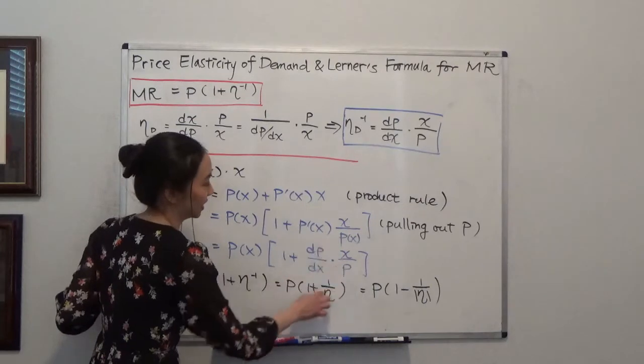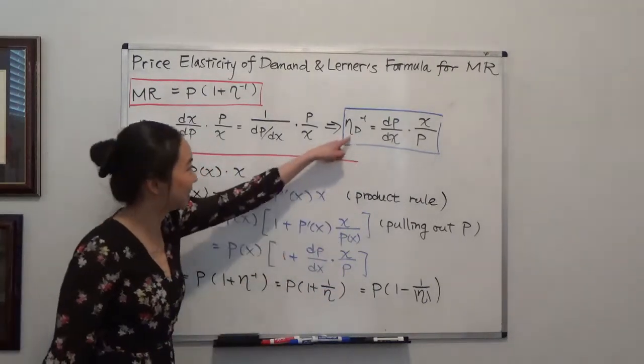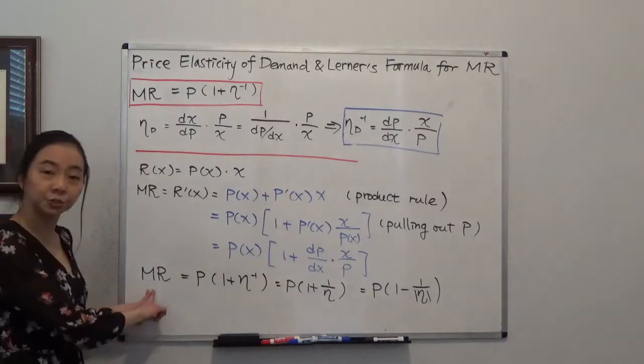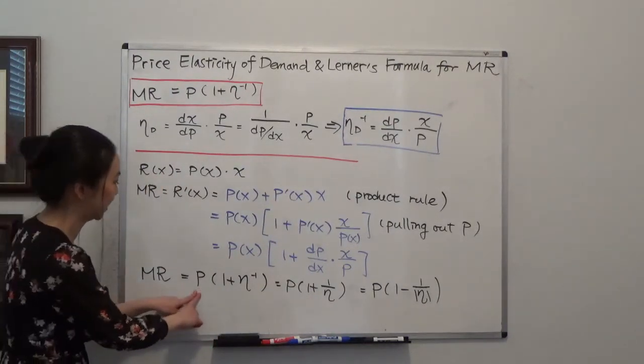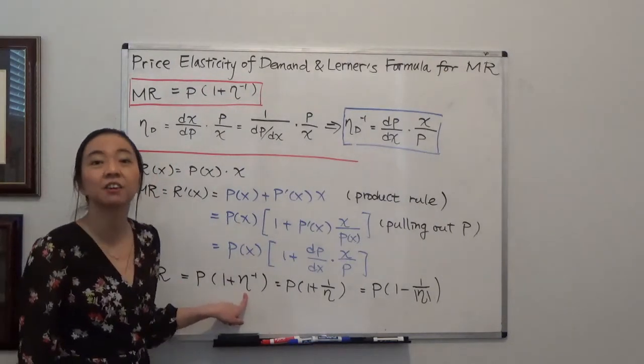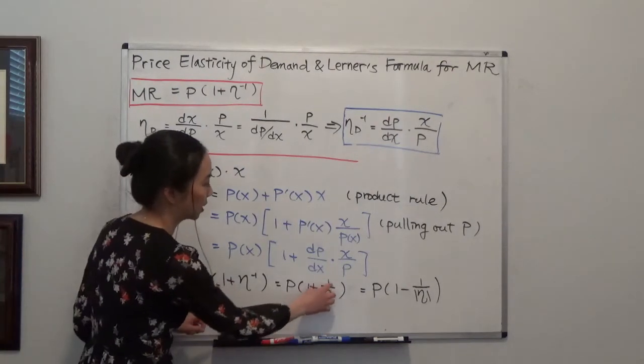But this term is what? It's exactly the reciprocal of our price elasticity of demand here. So I can see that my marginal revenue is equal to price times 1 plus the reciprocal of my price elasticity of demand. So you can rewrite that as p times 1 plus 1 over eta.